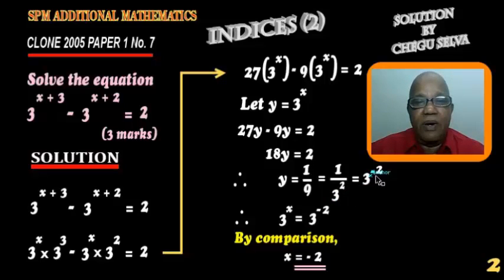When you bring it up, 3 squared becomes 3 to the power of negative 2. Therefore, 3 to the power of x equals to 3 to the power of negative 2. So by comparison, x is equal to negative 2.